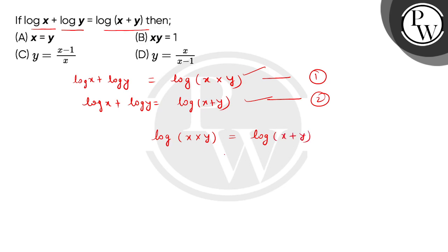We will get x multiplied by y is equal to x plus y. Now, we will shift the right-hand side to the left-hand side.